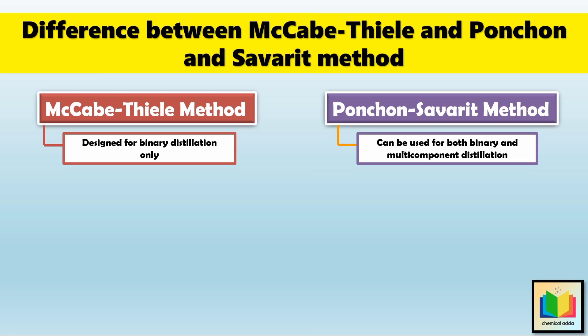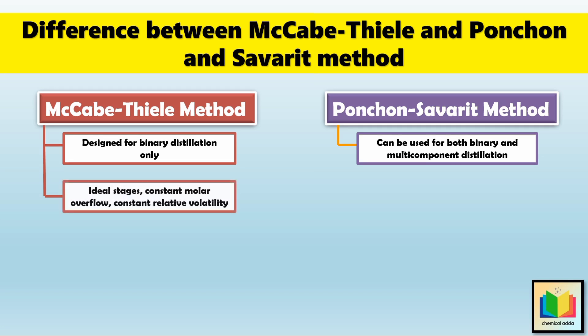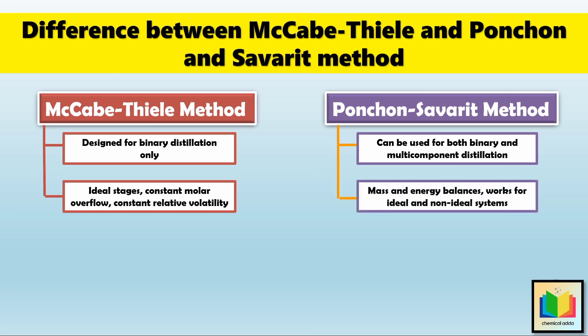The next point is key assumptions of the methods. In the McCabe-Thiele method, we assume ideal stages — meaning no heat losses and perfect mixing — constant molar overflow, and a constant relative volatility. The Ponchon-Savarit method is more flexible: it uses mass and energy balances, and can handle both ideal and non-ideal systems.